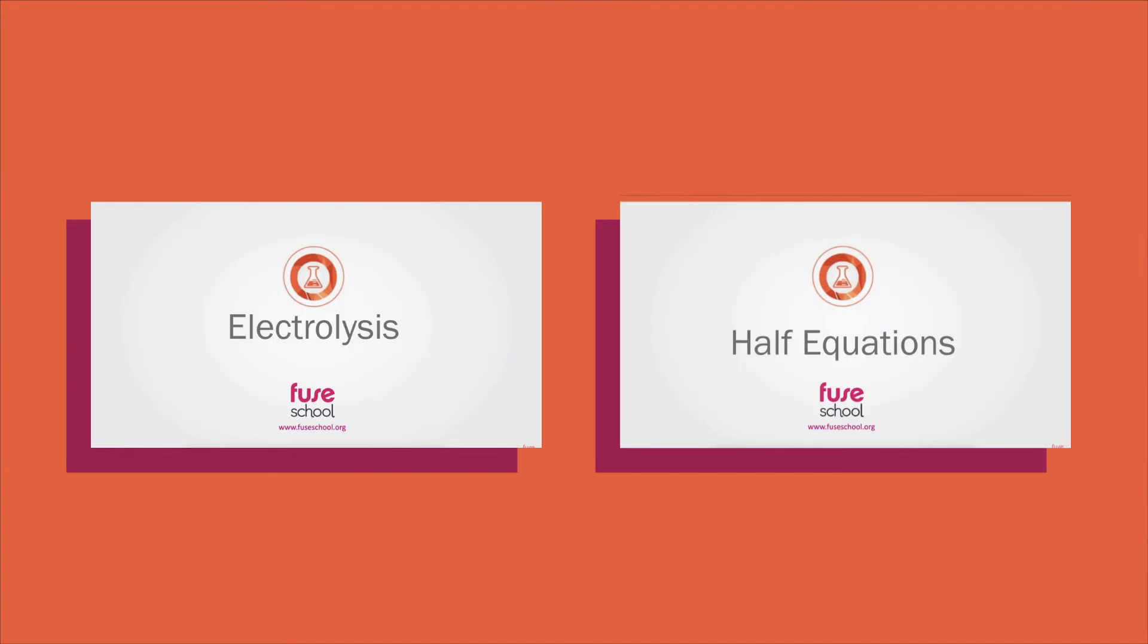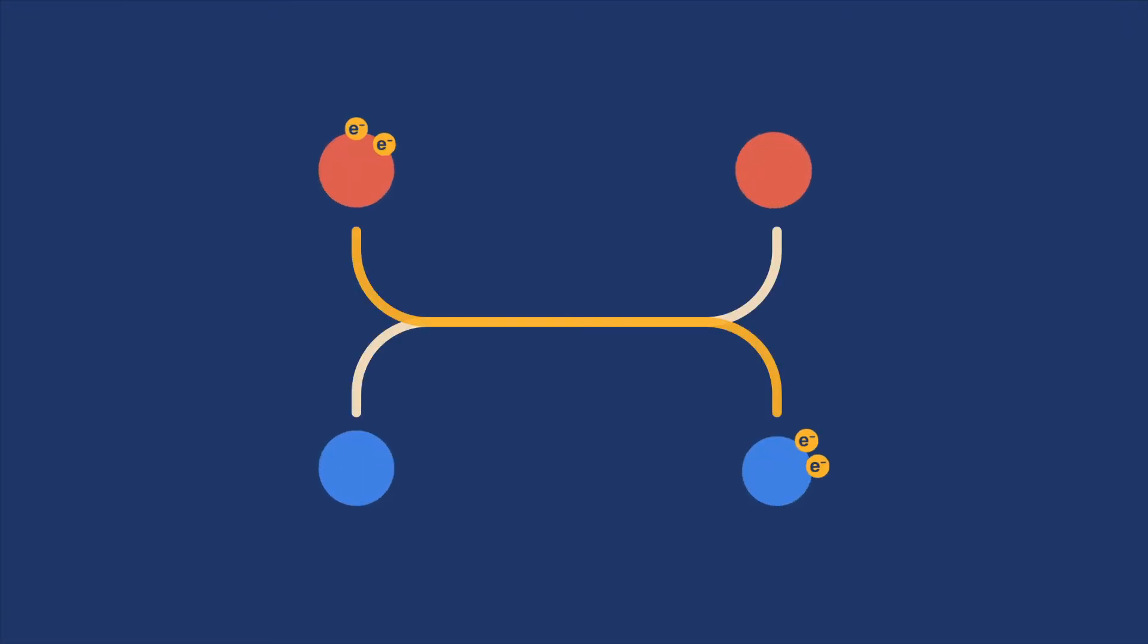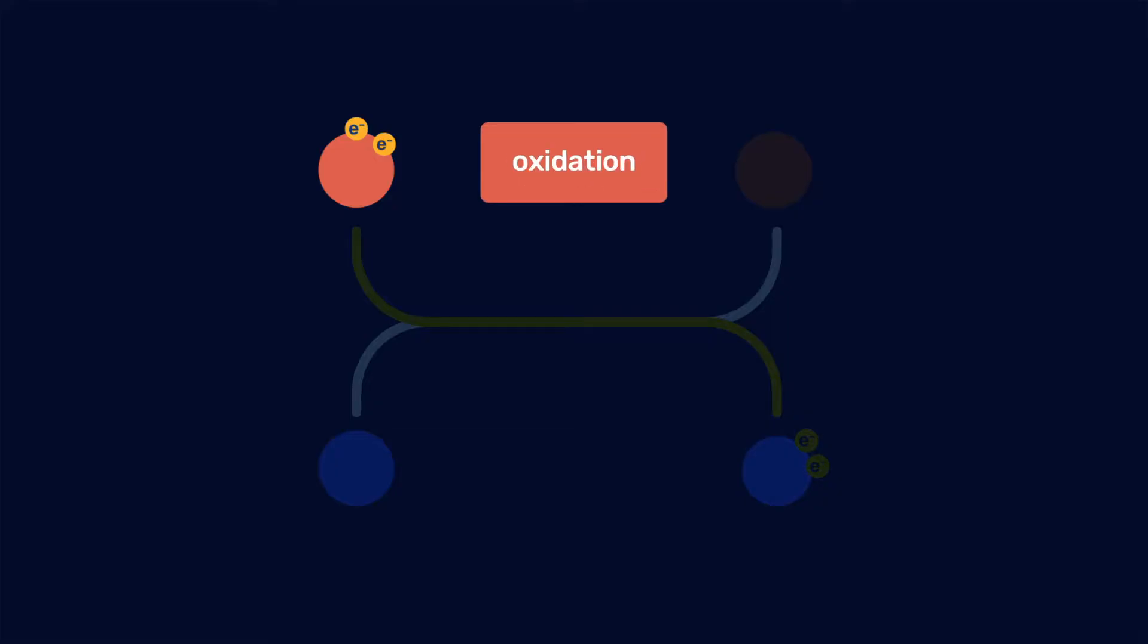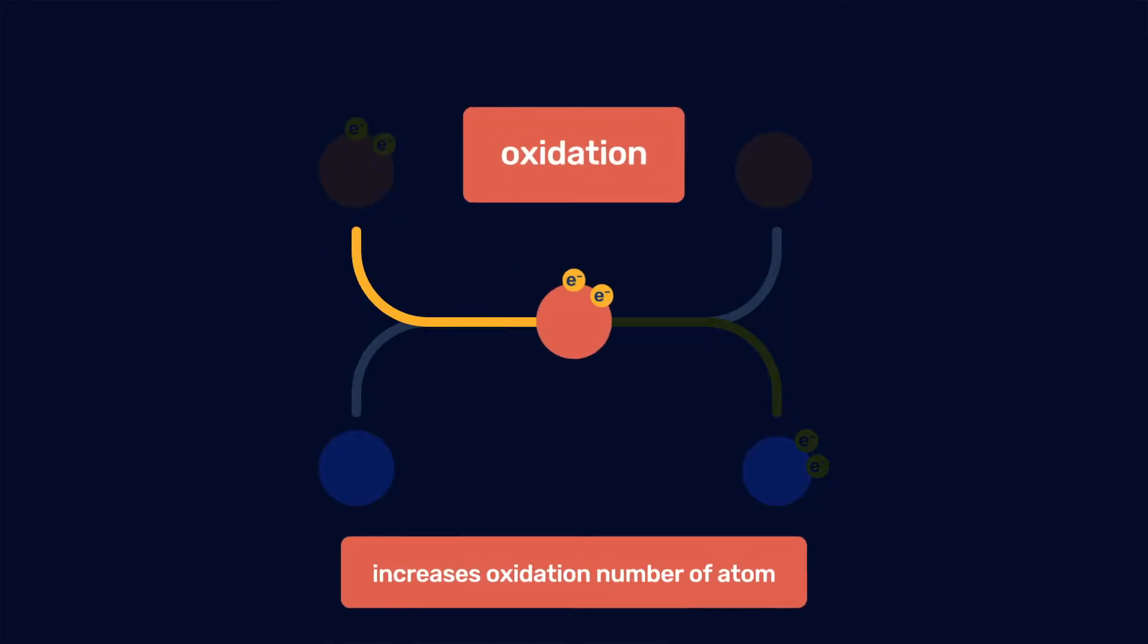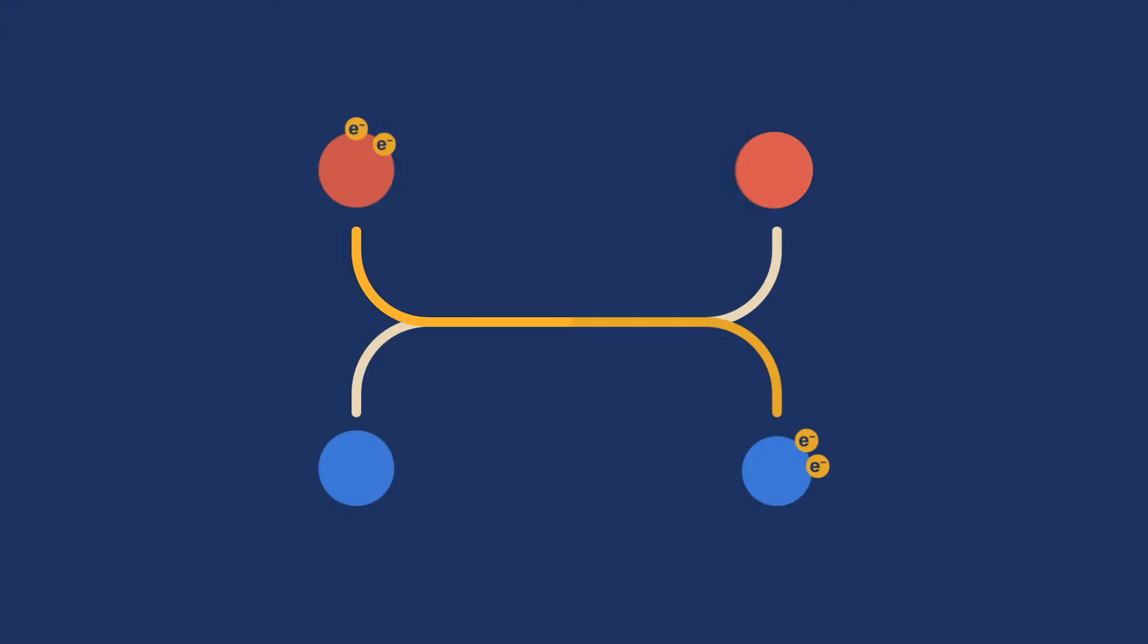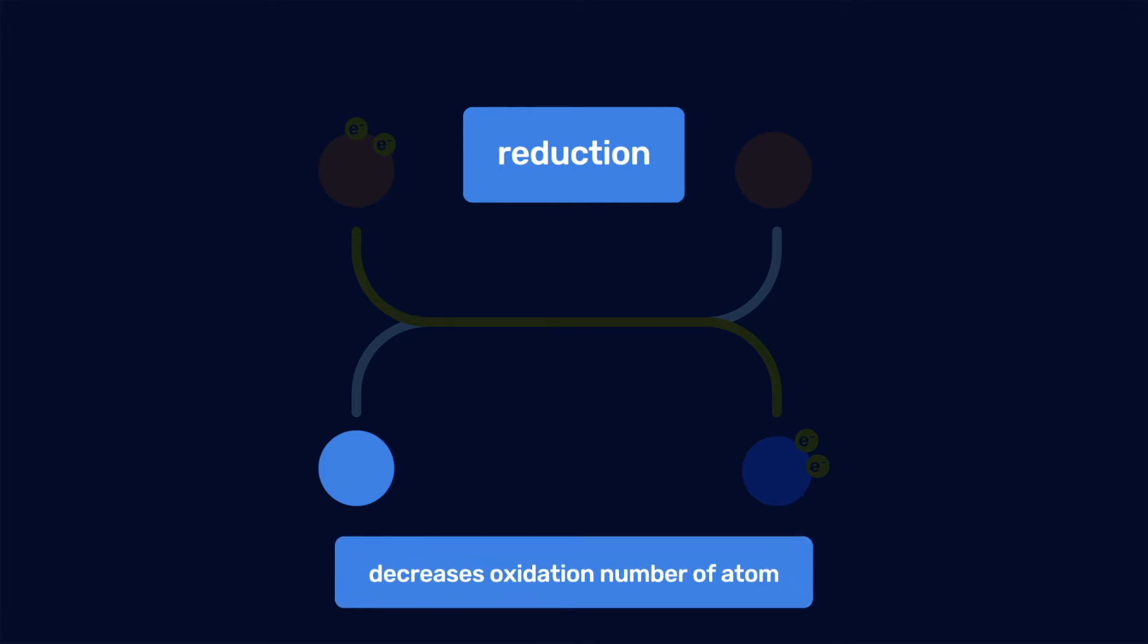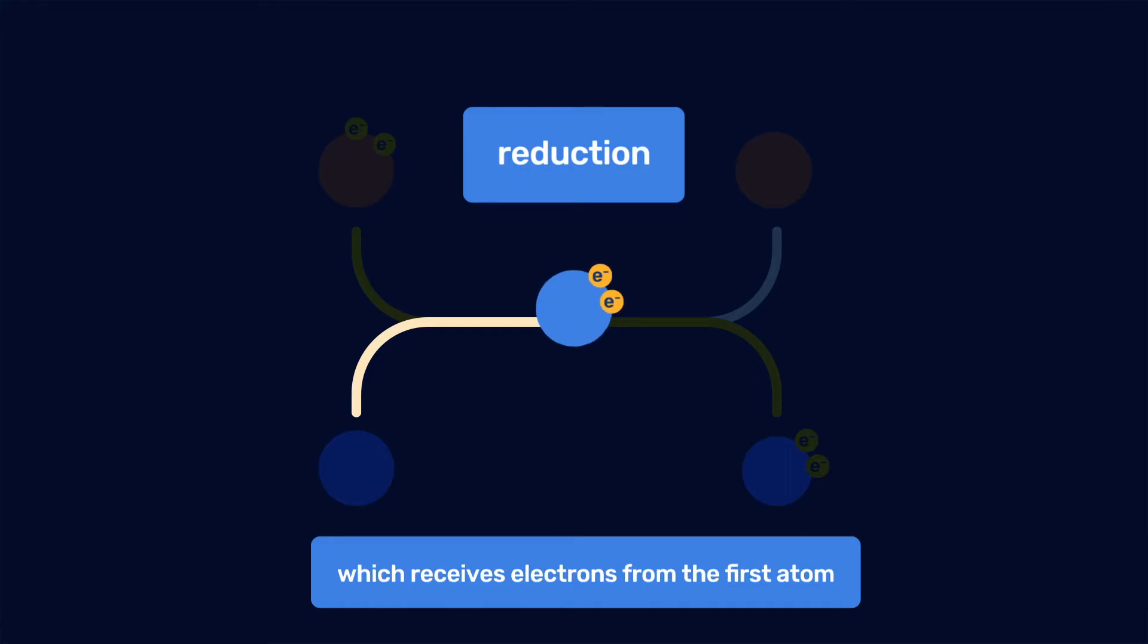In the previous videos, we have seen that redox reactions involve two half-reactions: an oxidation, which increases the oxidation number of an atom from which electrons are removed, and a reduction, which decreases or reduces the oxidation number of another atom by receiving electrons from the first one.